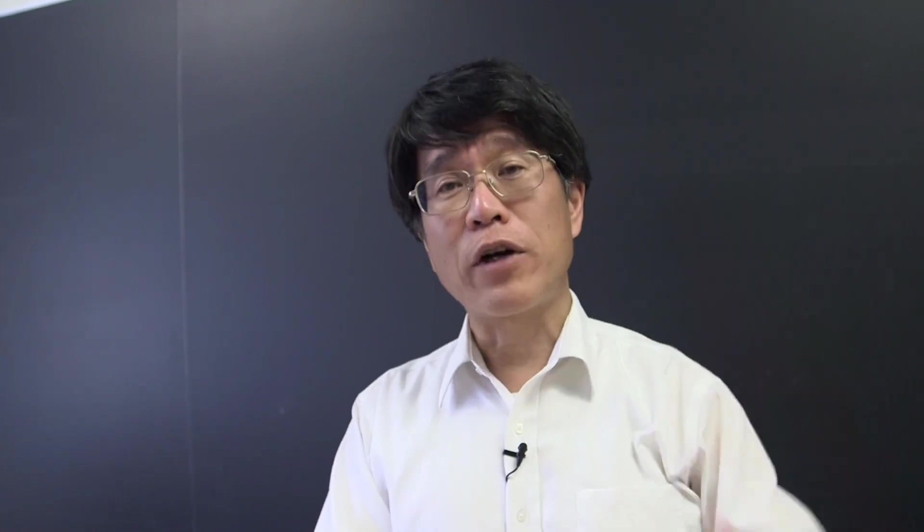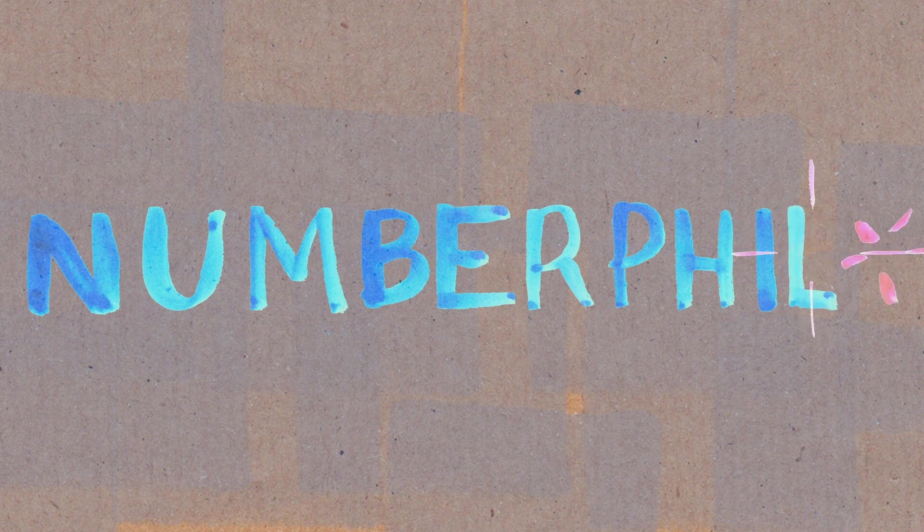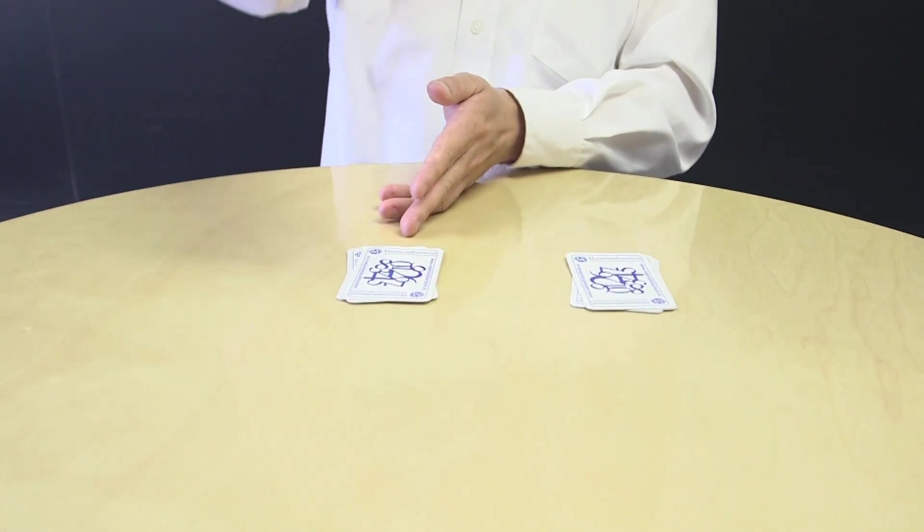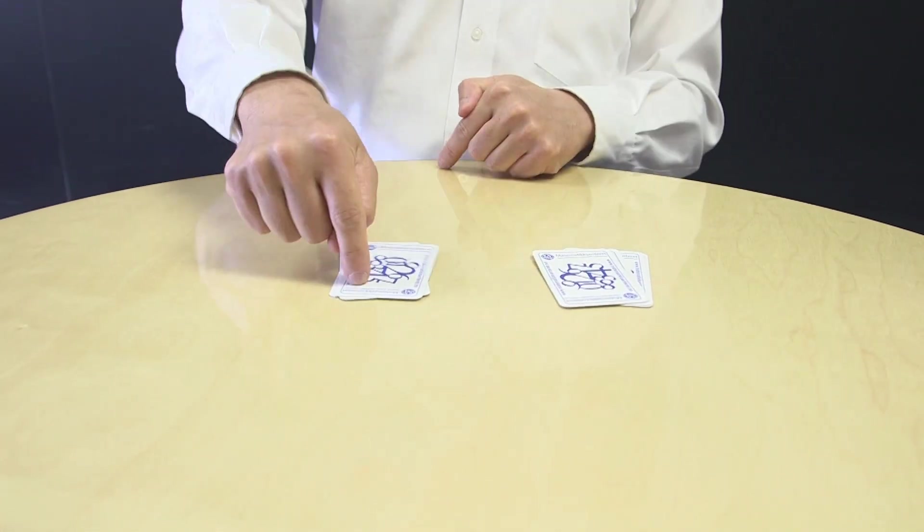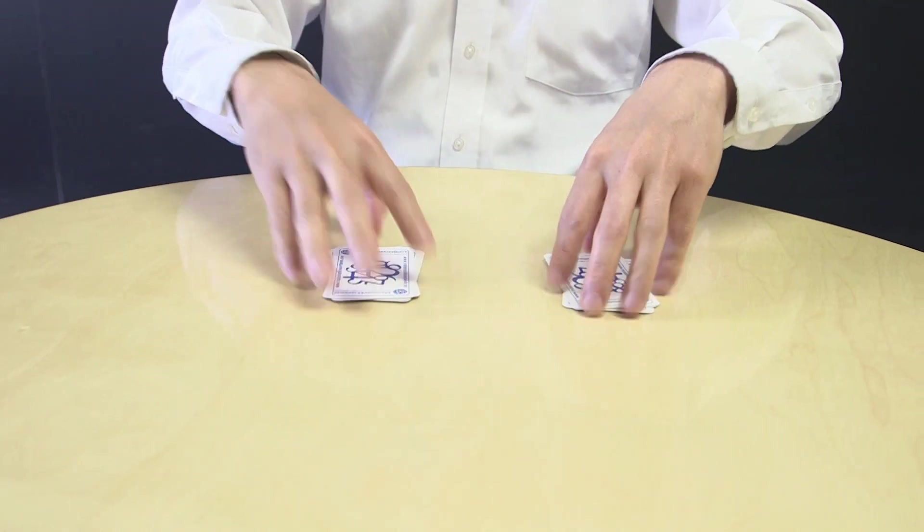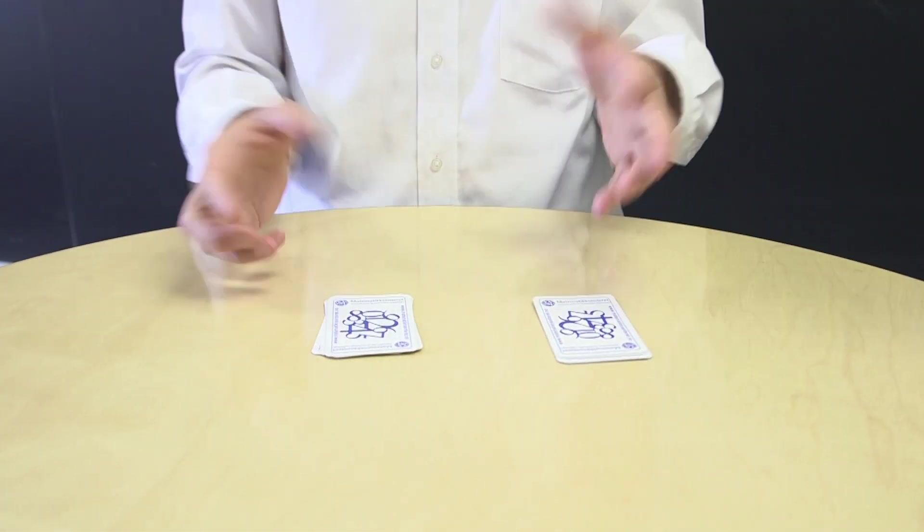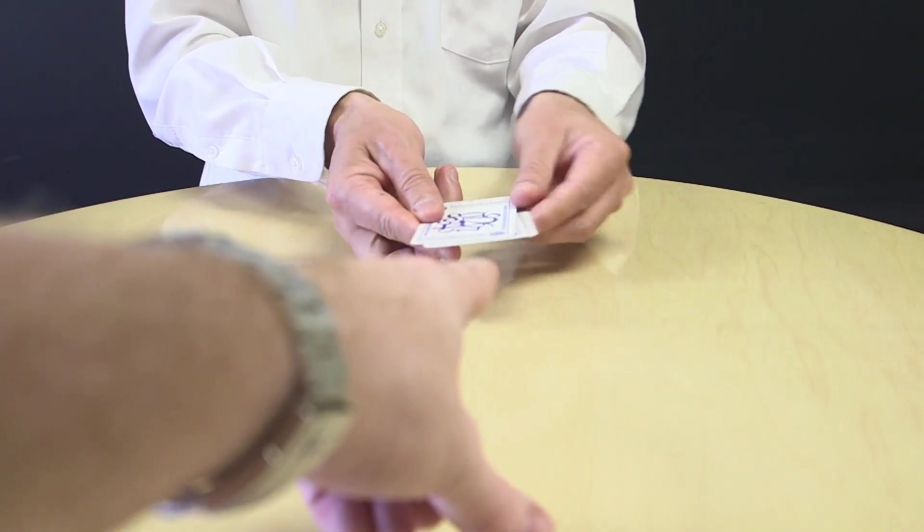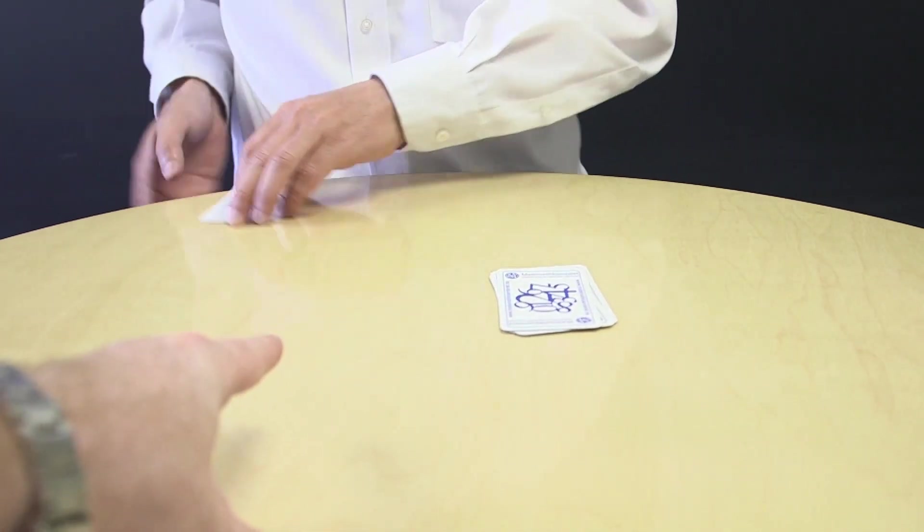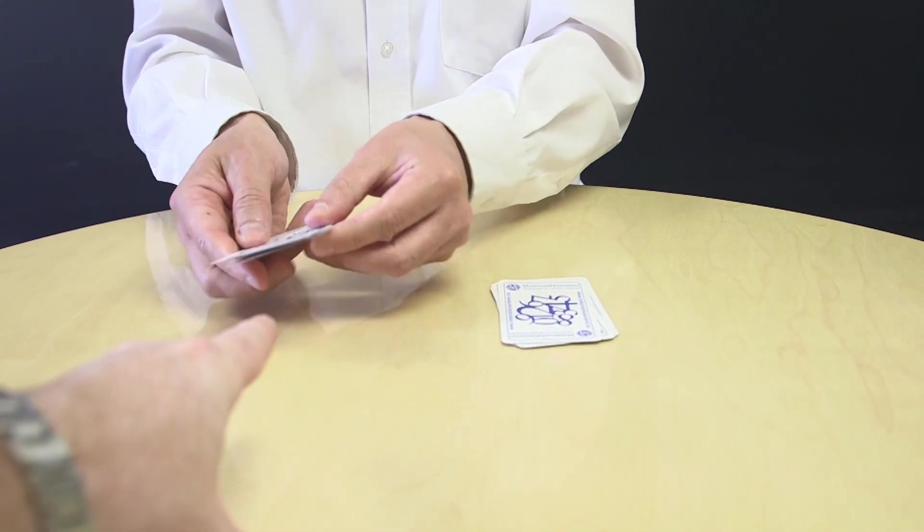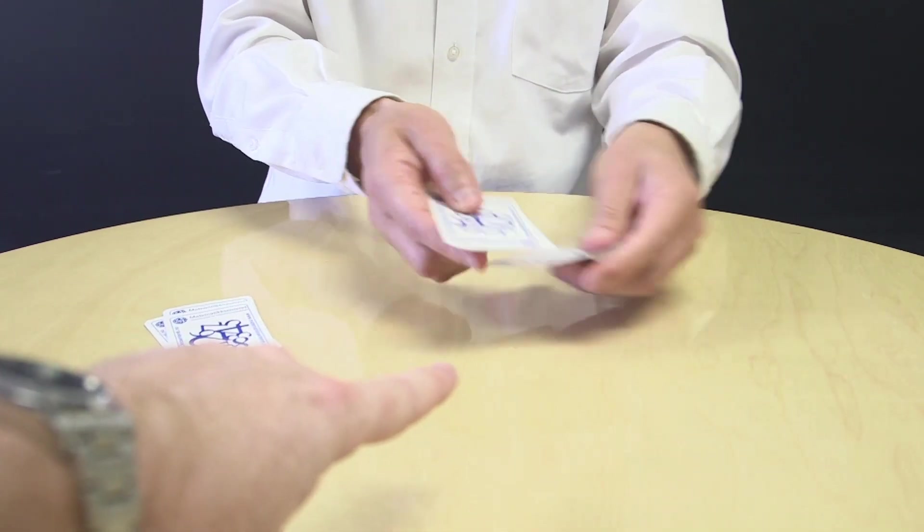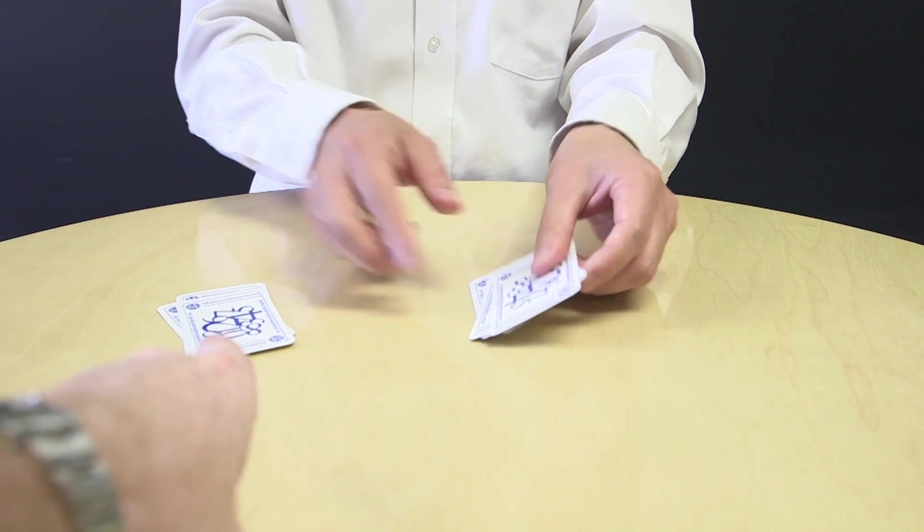And each time you tell me which one to shuffle, I'll shuffle that one. So let's shuffle a number of times. Let's use the phrase numberphile, shall we? N-U-M-B-E-R-P-H-I-L-E. So for each of these letters you say shuffle the right one or the left one. So Brady, you tell me which one to shuffle. So left or right? N-U-M-B-E-R-P-H-I-L-E.